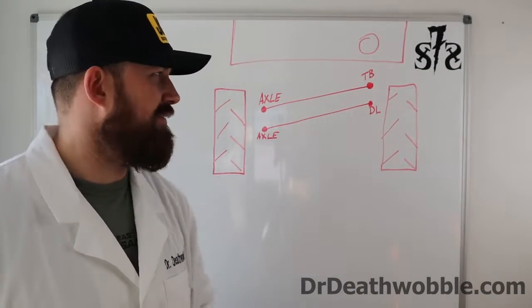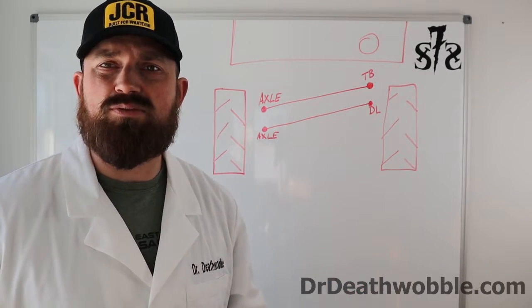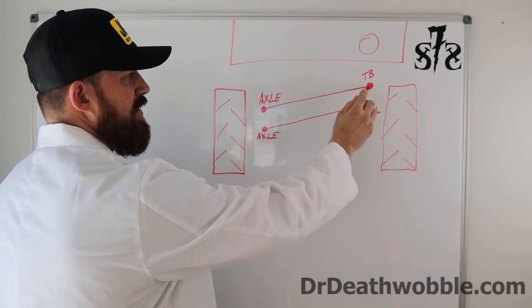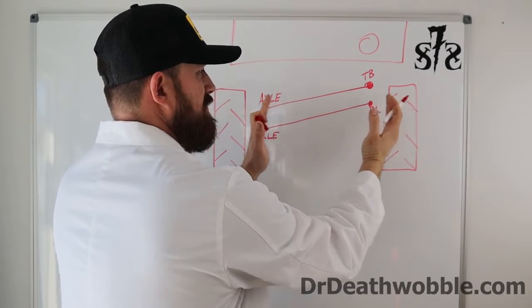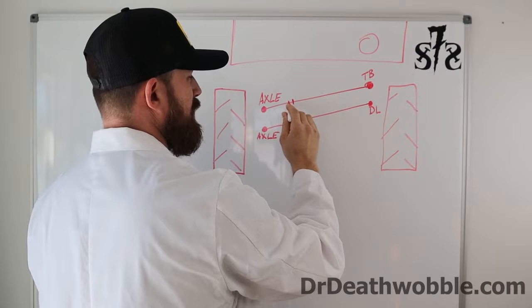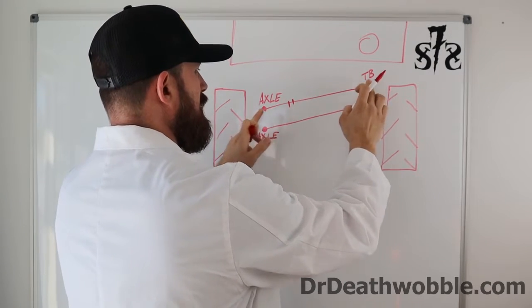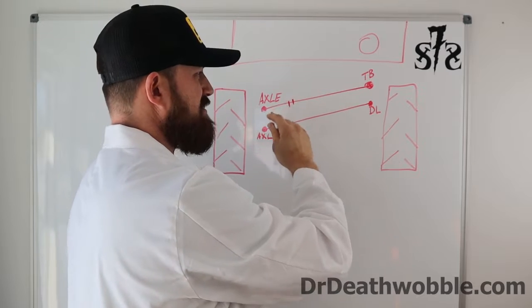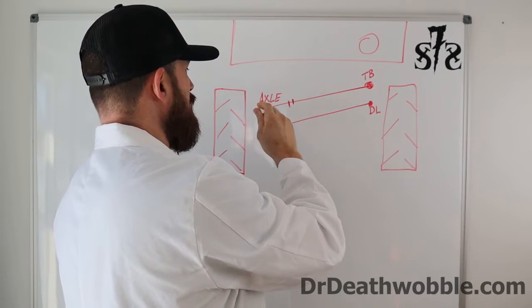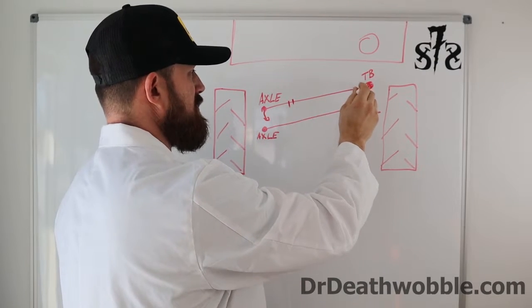You'll want to check the tie rod ends, ball joints, wheel bearings, and all components to make sure everything is tight. Then we start talking about the geometry of the steering and suspension if it's been modified. To understand bump steer, we need to understand how the front steering and suspension works on the Jeep. Looking at the Jeep from the front, there's a track bar that goes from the frame down to the axle. The track bar centers the axle under the vehicle, and as the suspension moves up and down it pivots on the frame because the axle can move with the suspension but the frame side can't.